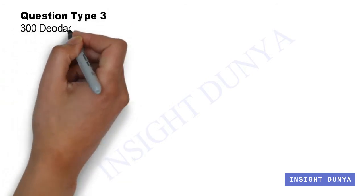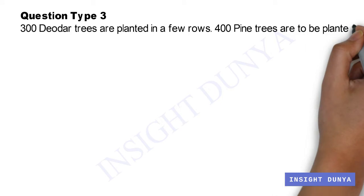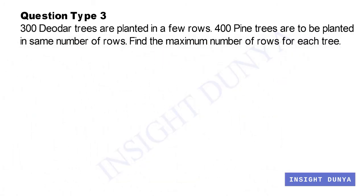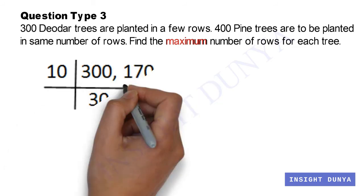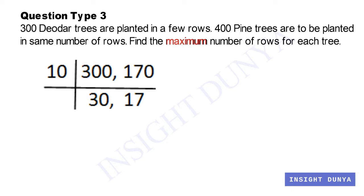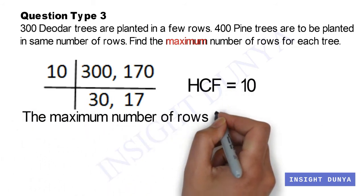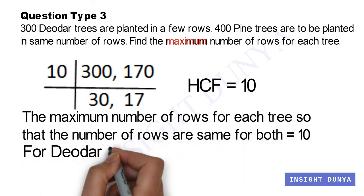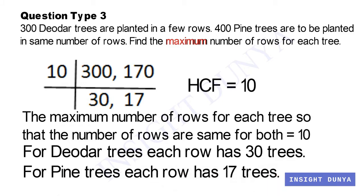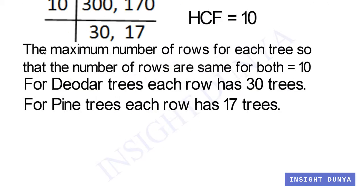Question type 3: 300 deodar trees are planted in a few rows and 400 pine trees are to be planted in the same number of rows. Find the maximum number of rows for each tree. The word 'maximum' is the keyword, so we calculate the HCF of 300 and 400. As 100 is the only common factor, the HCF of 300 and 400 is 100. For deodar trees, each row has 3 trees, and for pine trees, each row has 4 trees.